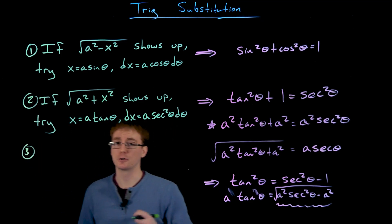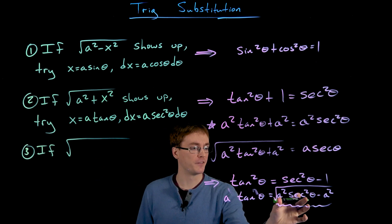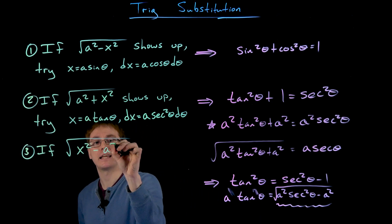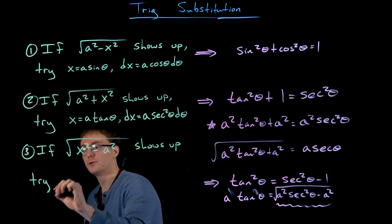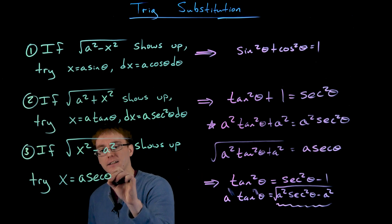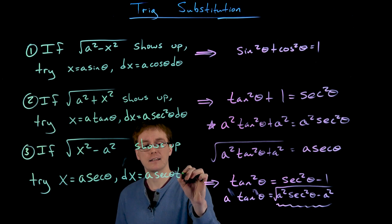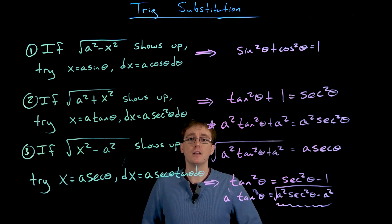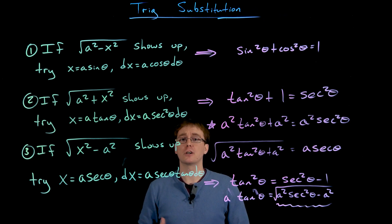That is our third and final case for trigonometric substitution. If we encounter an expression like x² minus a² under a square root inside our integral, we try setting x equal to a times secant of theta, and that causes dx to equal a times secant of theta times tangent of theta d theta. To summarize: try other methods first like substitution. If those don't work and we have a root quantity, we try a trig substitution.